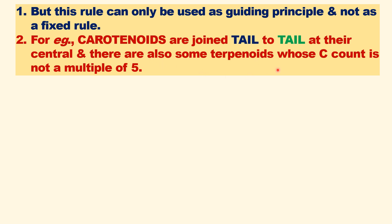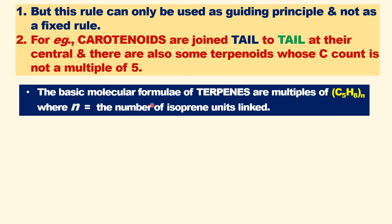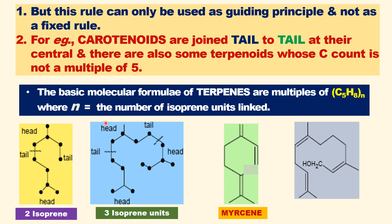There are also some terpenoids whose carbon count is not a multiple of five. In general, the basic molecular formula of terpenes or terpenoids is multiples of isoprene units, where n equals the number of isoprene units linked. Isoprene units can be linked in head-to-tail or other fashions.